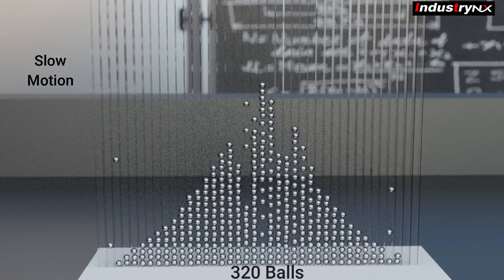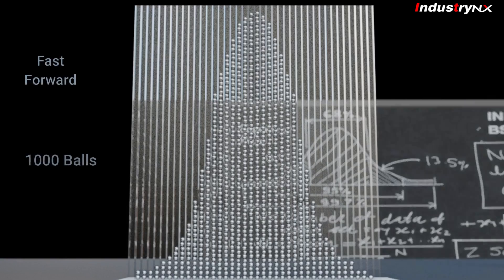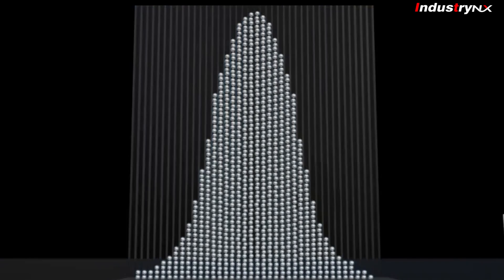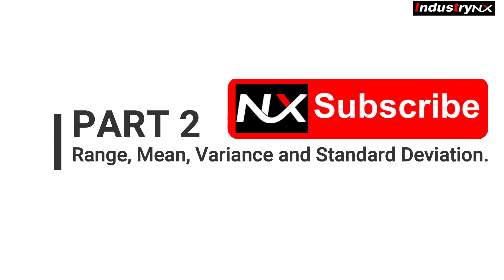You must have noticed, now sorted balls are forming a normally distributed curve, that is a bell-shaped curve. For more information, you need to watch our next part to learn range, mean, variance, and standard deviation.